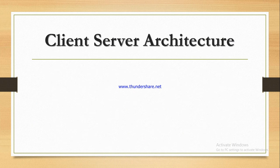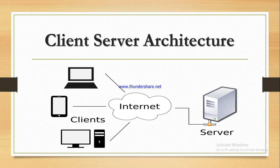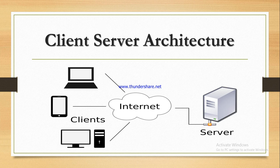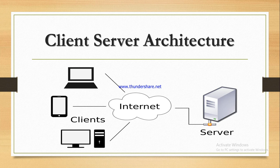Now, client-server architecture. When we use the internet to search or send mail, we use client computers such as laptops, tablets, and desktops. When you send a request to search a keyword or message from your client computer, it goes to the internet, reaches the server, and the server performs all the processes — web crawling, indexing, and algorithm — after which it shows the results back to our client computers.